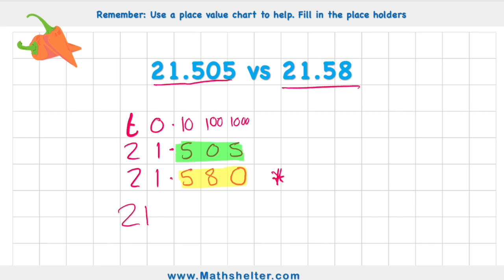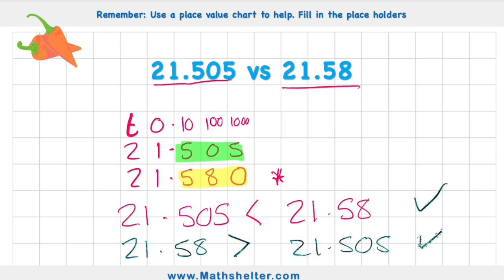So how do I rewrite this? I'm going to say 21.505 is less than 21.58. Or I could say 21.58 is greater than 21.505. Both correct.